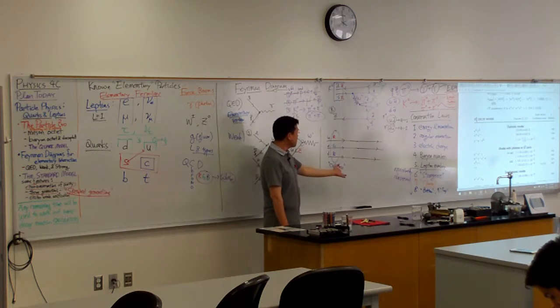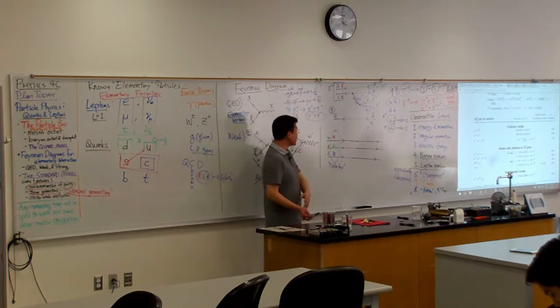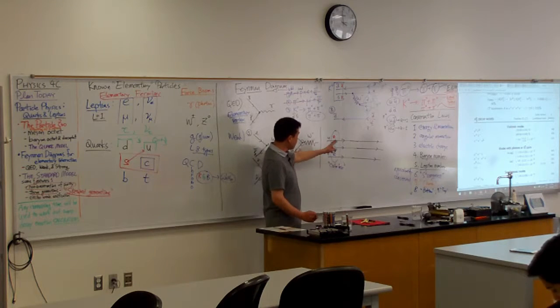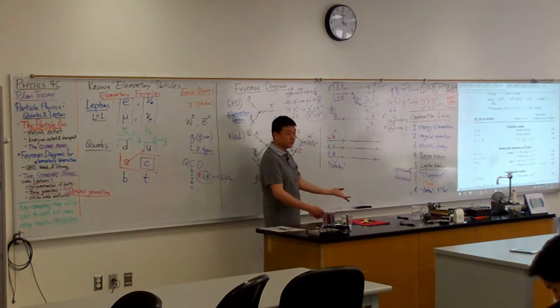There's no good theory to, like for example, predict mass of the neutron from the known masses of up and down quarks. It just doesn't work.